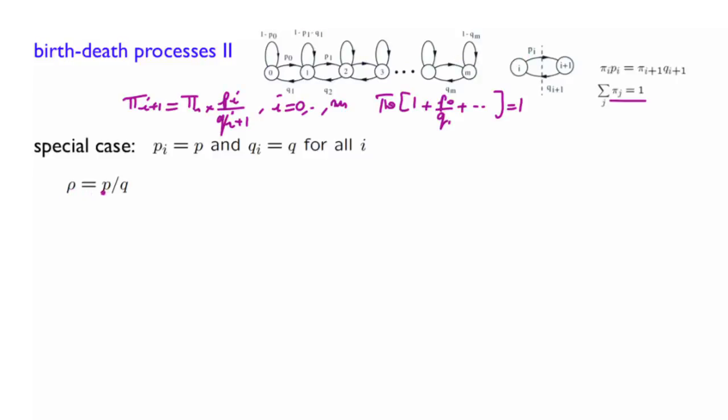If rho is bigger than 1, so that p is bigger than q, it means that whenever we are at some state in the middle, we are more likely to move right as opposed to moving left, which means that the chain has a tendency to move in that direction. If you think of this as a number of customers in queue, it means your system has the tendency to become loaded and to build up a queue. So rho being bigger than 1 corresponds to heavy load. Rho less than 1 corresponds to a system where queues have the tendency to drain down.